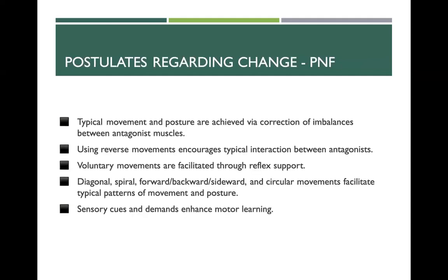Postulates regarding change in PNF: typical movement and posture are achieved via correction of imbalances between antagonist muscles — stronger muscle groups stimulate weaker muscle groups. Using reverse movement encourages typical interaction between antagonists through successive induction, where you stimulate one motion by using another. Voluntary movements are facilitated through reflex support, with reciprocal innervation inhibiting reflexes. Diagonal, spiral, forward, backward, sideward, and circular movements facilitate typical patterns of movement and posture — these are the natural movements of the body and require both sides of the body.